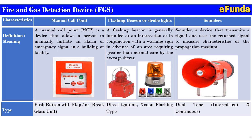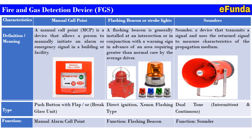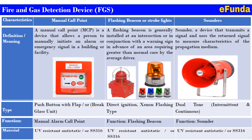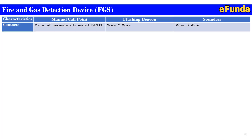The functions are: the manual call point provides manual alarm initiation; the flashing beacon function is to provide a visual warning; and the sounder function is to provide audible sound output. Material used is UV-resistant anti-static or SS316 for the manual call point assembly, similarly UV-resistant anti-static or SS316 for the flashing beacon or strobe light assembly, and UV-resistant anti-static or SS316 for the sounder assembly.